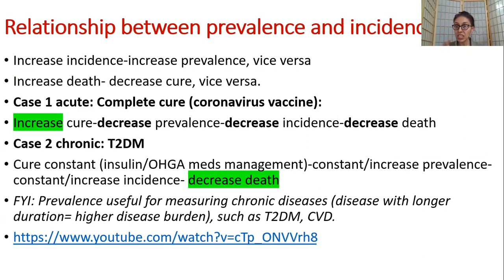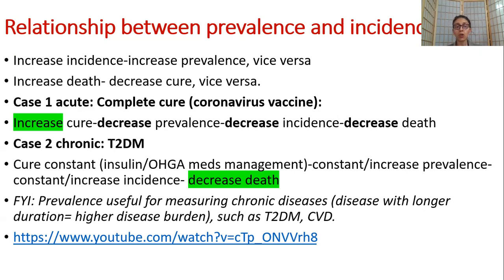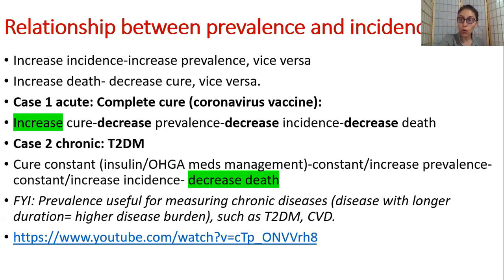It all depends on the disease condition and the population being investigated. For diabetes, you may have increase or constant incidence, but death because of diabetes has decreased compared to the 1930s when there was no good diabetes management. So death has decreased, but you may not see a change in prevalence and incidence — they could be constant or may increase. We have to appreciate why: because you do not have a cure; you are managing your chronic disease condition. Prevalence is very useful for measuring chronic diseases — those with longer duration, no cure, and high disease burden, costing around $6 billion annually for diabetes management in Australia.